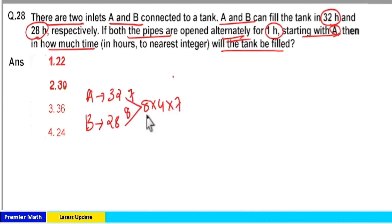8 into 7 is 56. 56 into 4. 50 into 4 is 200. 6 into 4 is 24. So 224 is the LCM.